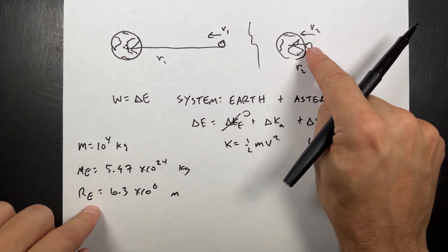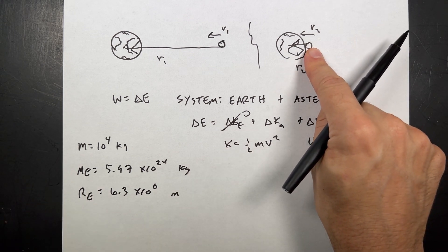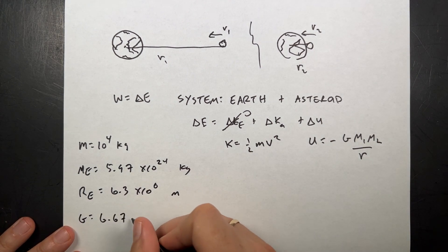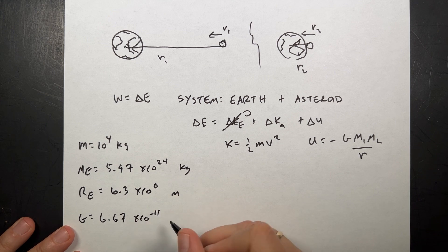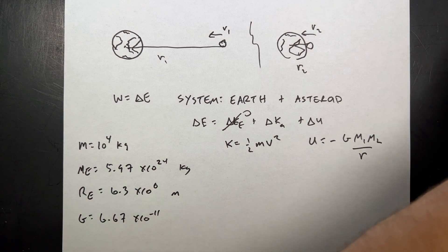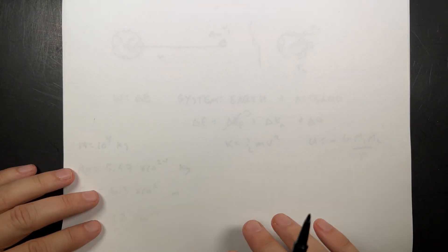And I need that because that's where it ends up. It ends up at the radius of the Earth. And g is 6.67 times 10 to the negative 11th. And I'll need those values when I calculate stuff. Okay, so let's write down my work energy equation.